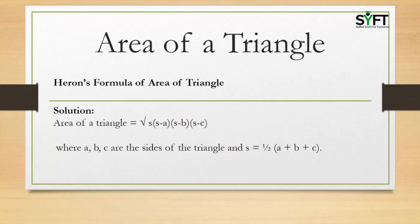Another formula for the area of a triangle is: Area equals the square root of S(S − A)(S − B)(S − C), where S is the semi-perimeter — the sum of the sides divided by 2. So S equals half into (A + B + C), where A, B, and C are the sides of the triangle.